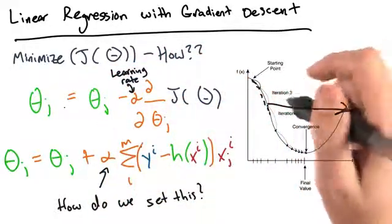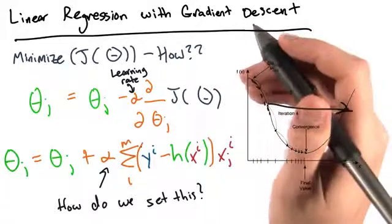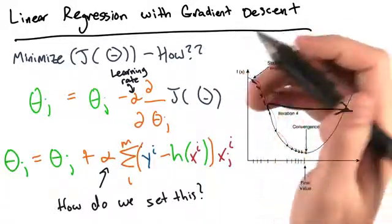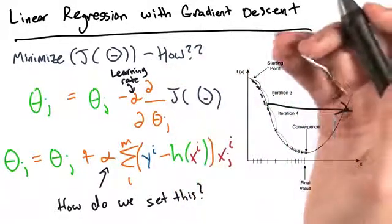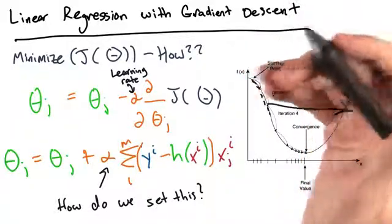The best way to make sure your alpha is suitable is simply to keep track of your cost function's value as you iteratively update it, and just make sure that it's always going down. If it's not, your learning rate is too high.